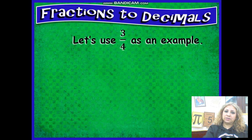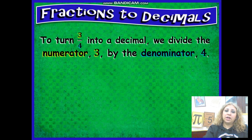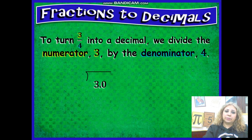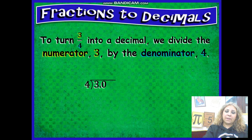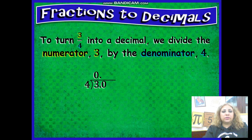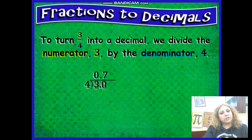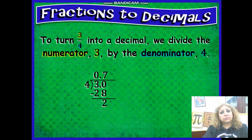Fractions to decimals. Let us use three fourths as an example. We are going to divide three by four, the numerator by the denominator. Of course, three is less than four. I'm going to add a decimal point and a zero and start dividing. I will start with zero point. Thirty divided by four is seven. Seven times four is 28. Subtract you will get two.